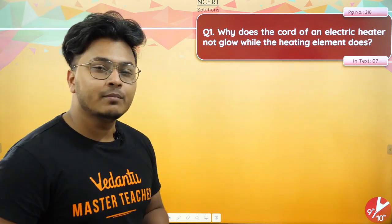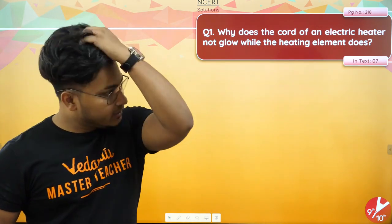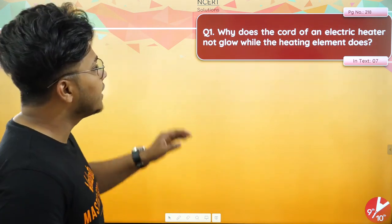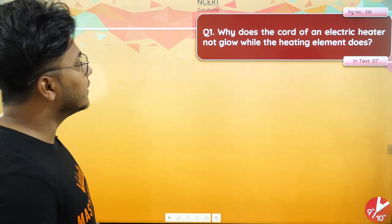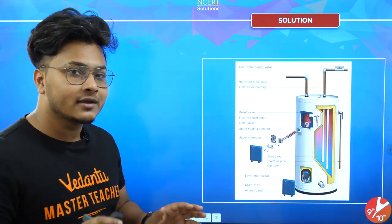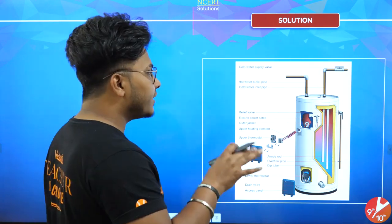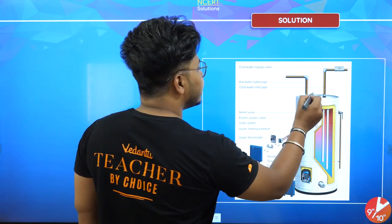Question number one, page number 218 — it's a very good question and very common in exams. The question is: why does the cord of an electric heater not glow while the heating element does? The electric cord is the simple wire you use to connect the heater to the power supply, while the heating element is the component that actually heats up.